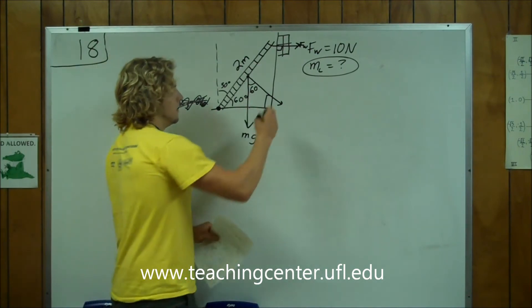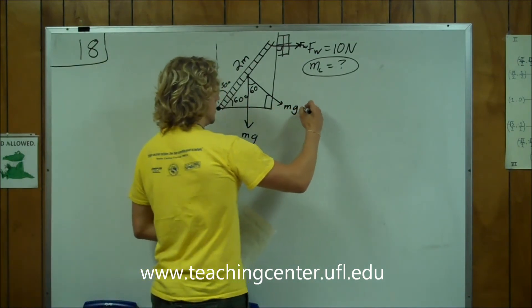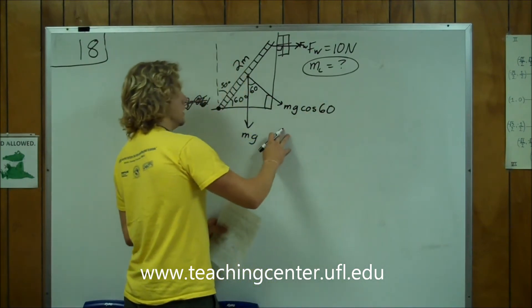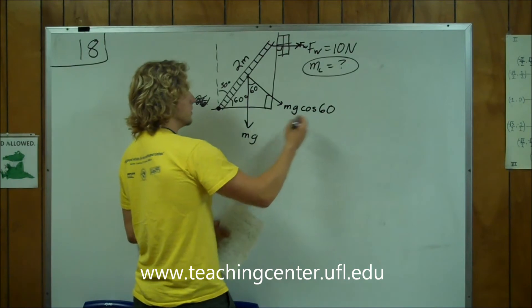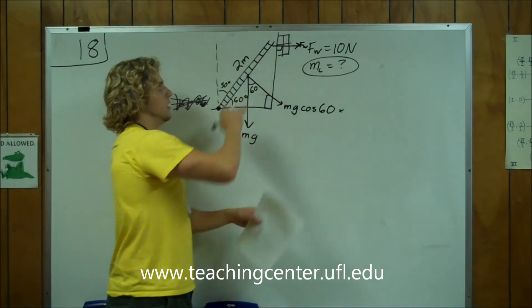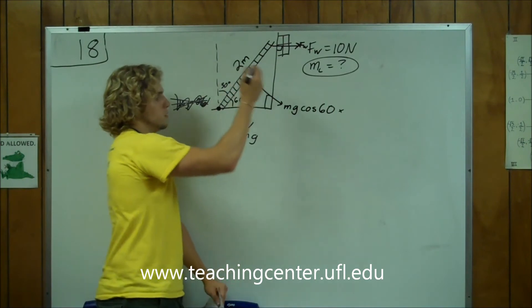So, now we have this force of MG cosine of 60. Alright? And let's turn it into torque by multiplying it by, this is a 2 meter long ladder. This is the center of mass, so it would be 1 meter.